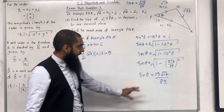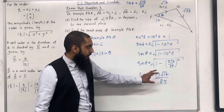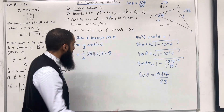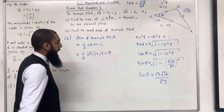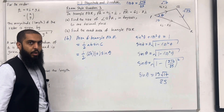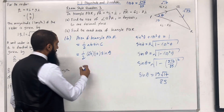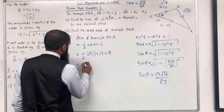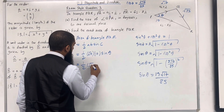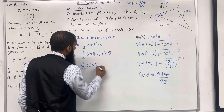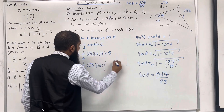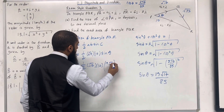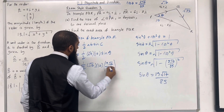Substituting the exact value of sin θ into the area formula: Area = ½ × √17 × 10 × 19√17/85. Putting this into the calculator gives exactly 19 square units.